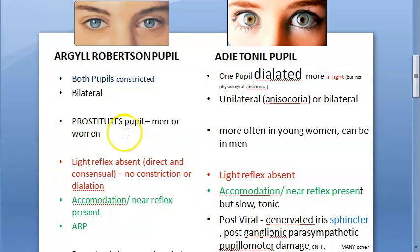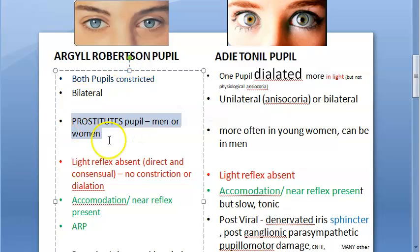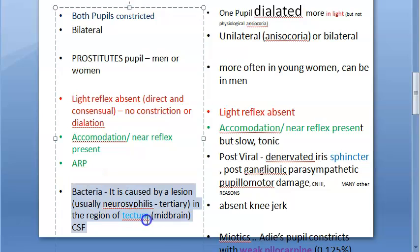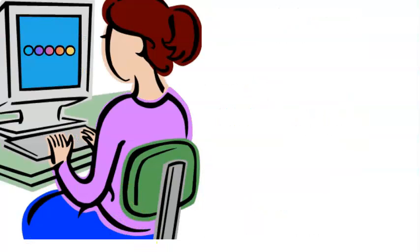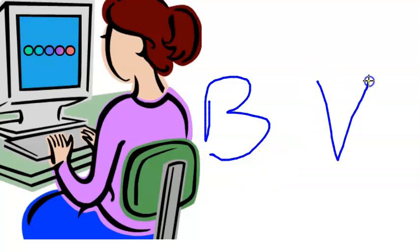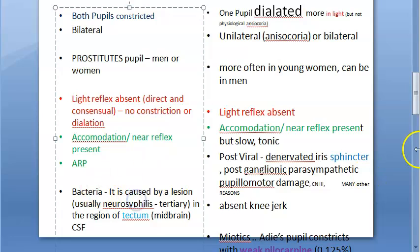Argyle Robertson pupil is caused by syphilis — specifically neurosyphilis or tertiary syphilis — due to Treponema pallidum, a bacterium. Adie's tonic pupil, on the other hand, is post-viral, occurring after a viral attack. So Argyle Robertson pupil is bacterial and Adie's tonic pupil is viral.